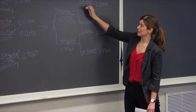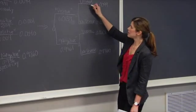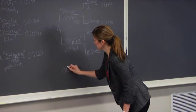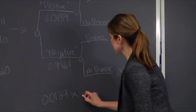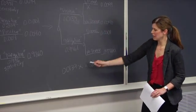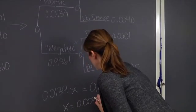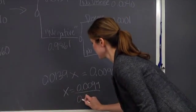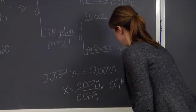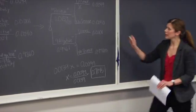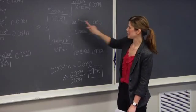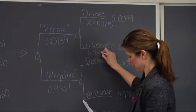The next step is to calculate the conditional probabilities at this stage in the tree. Let's define this probability by a variable x. We know that 0.0139 times x has to equal 0.0099, meaning this times this has to equal this. Solving for x: x equals 0.0099 divided by 0.0139, which gives x equals 0.7145. Going through and doing that for each one of the joint probabilities, this number divided by this number is 0.2855, and so on.